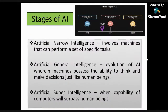There are three stages of Artificial Intelligence. The first is Artificial Narrow Intelligence, the second is Artificial General Intelligence, and the third is Artificial Super Intelligence. Artificial Narrow Intelligence, developed around 2015, involves machines that can perform a specific set of tasks. Artificial General Intelligence is an evolution where machines possess the ability to think and make decisions like humans. Artificial Super Intelligence is the capability of computers that will surpass human beings and perform tasks on their own. Currently, we are somewhere between Artificial Narrow Intelligence and Artificial General Intelligence.